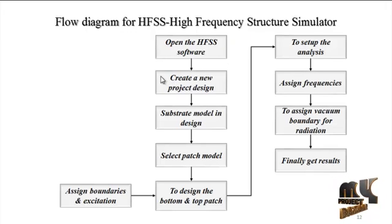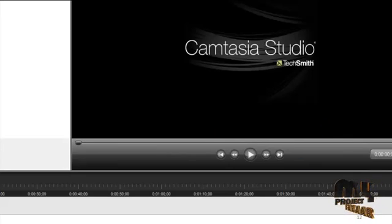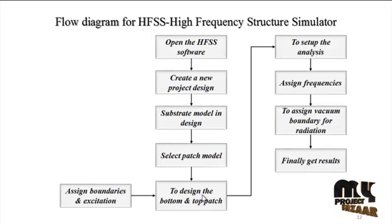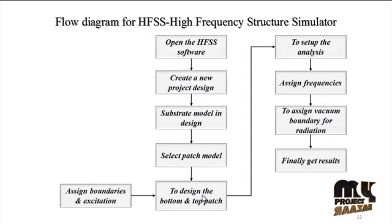After creating the new project, we design the substrate model using the silver substrate — that is the Ag material. Then we select the patch model, using a T-patch antenna with 3 layers of substrate to design the top and bottom. The top layer is the patch and the bottom layer is the ground. We then assign the top and bottom boundaries using perfect electric conductor (PEC) boundary conditions, and set the excitation as wave port excitation.